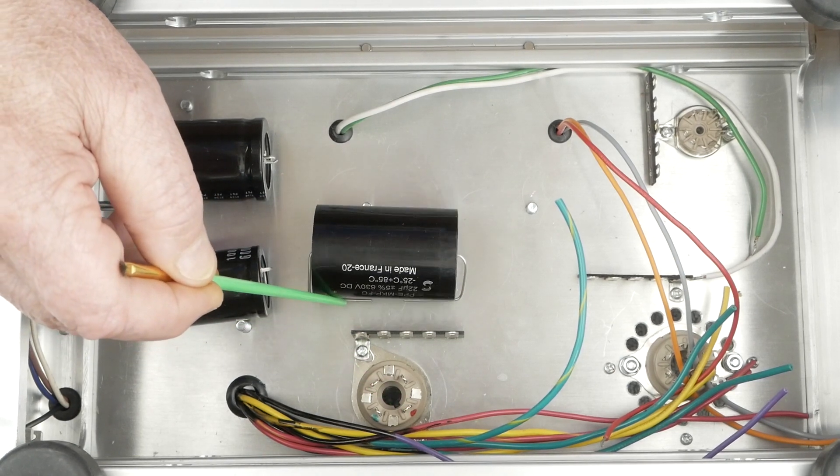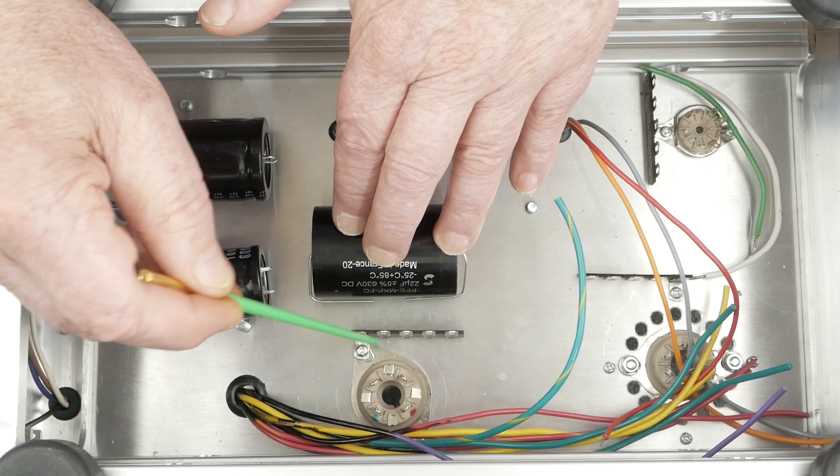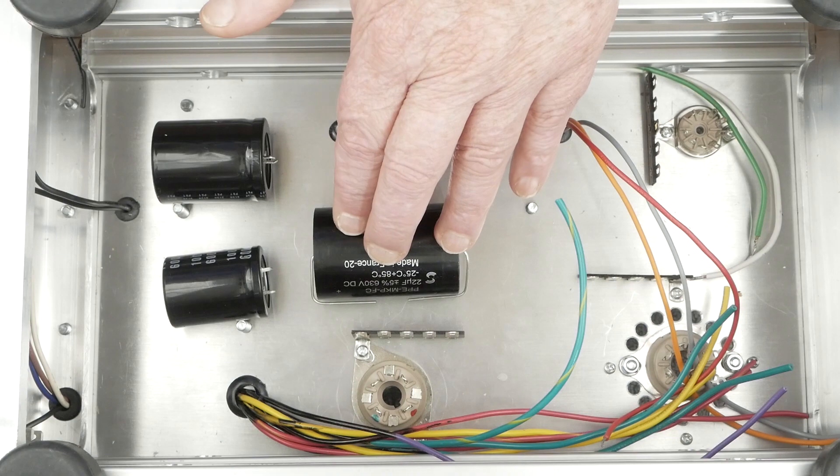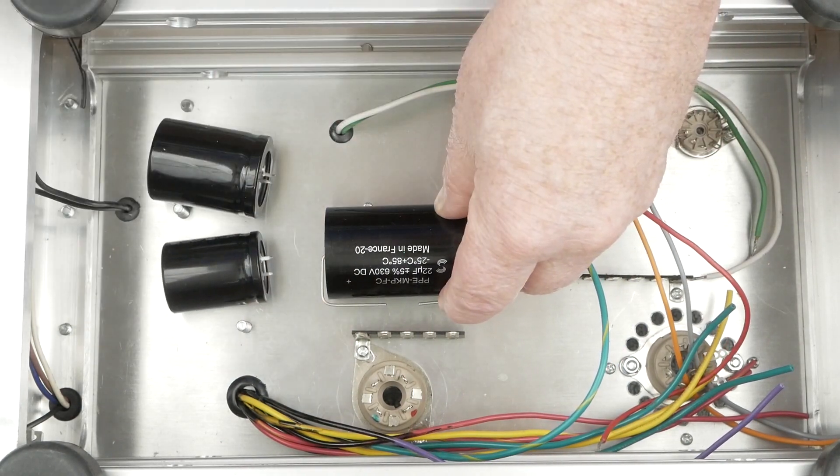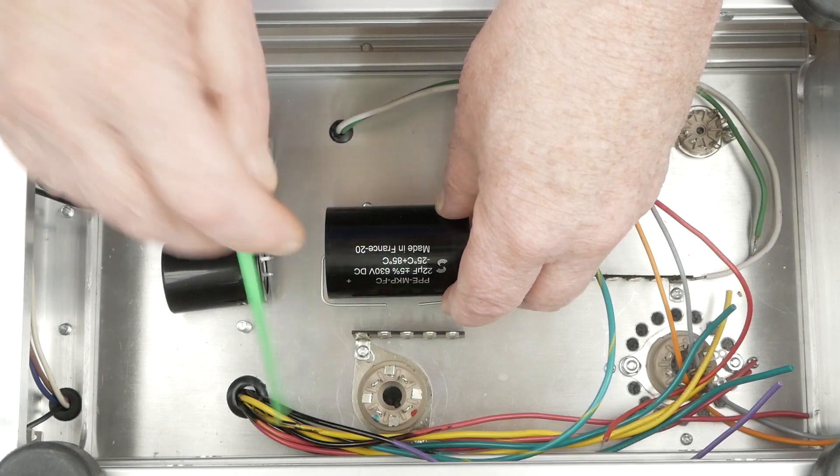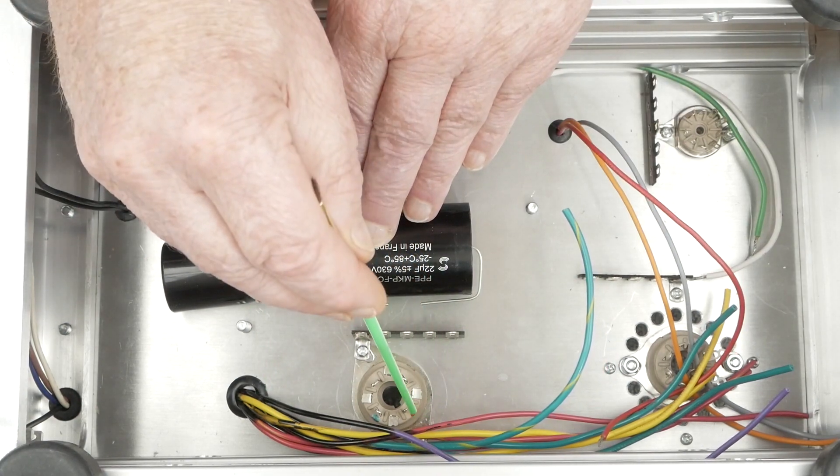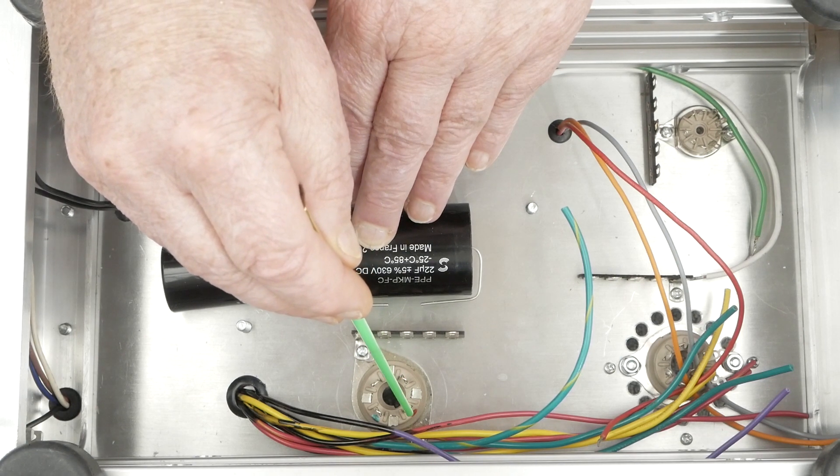This will be where the DC comes off the rectifier tube. As I think I said before, I'm going to make these two terminals the star ground point. And so this capacitor could sit right here. This one side can go straight to the ground. And then this other one can go up and around and come over here to the output of the rectifier tube.